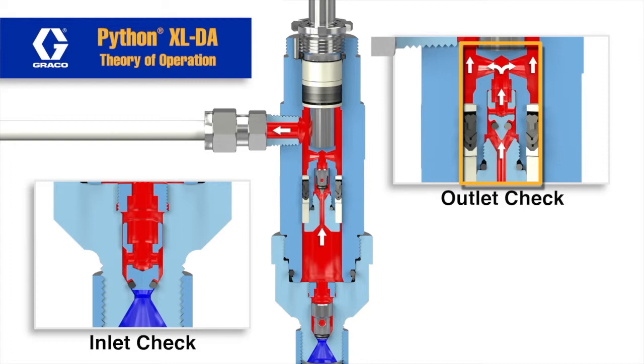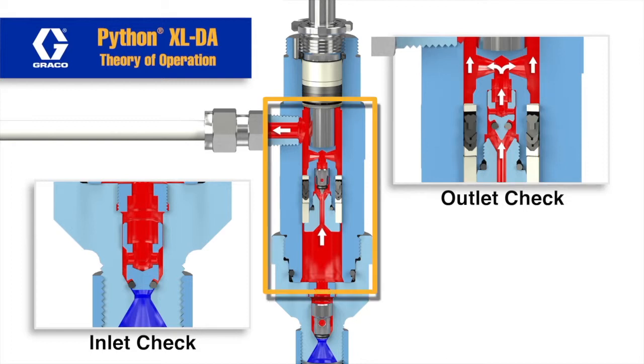The fluid will pass through the outlet check valve port indicated by white arrows in the animation. The red shows the entire pump fluid section is pressurized during the downstroke.